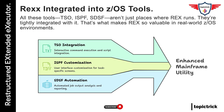Then there's ISPF, the Interactive System Productivity Facility. It's basically your user interface for navigating the mainframe. ISPF panels, menus, and options can be customized using REXX, which lets you create task-specific screens and automate multi-step tasks in a more user-friendly way. You're not just scripting—you're building usable tools for other users on the system.